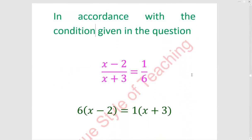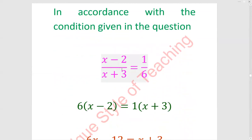Given in the question is that x minus 2, numerator divided by x plus 3, which is denominator, we will get 1 upon 6.